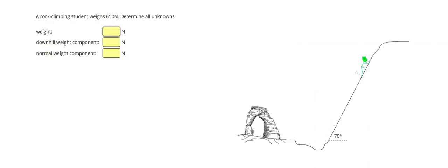Alright, so in this one we have a really steep hill. A rock climbing student weighs 650 newtons. Determine all unknowns. So once again, let's draw that weight straight down. Then my first step is I'm going to draw a downhill weight component perpendicular to the hill. Remember, I'm going to try to end up with something where it looks like a rectangle, and I did a pretty solid job of that. But in this case, since that hill was so steep, it's my downhill weight component that's going to be the larger one.